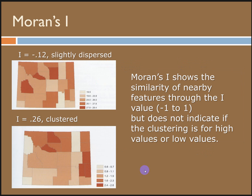In this top map, the polygon values might represent something like mean household age. The Moran's I index is negative 0.12, which means the values are slightly dispersed — this might tell us there isn't a strong spatial pattern explaining the distribution of mean household ages. In the bottom map, the Moran's I is 0.26, meaning the values are exhibiting slight clustering. Near features are more related than distant features. It's important to know that the index doesn't differentiate between high feature values and low feature values — it only indicates whether or not near features are similar.